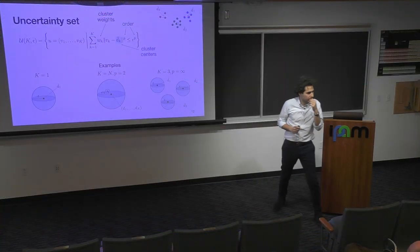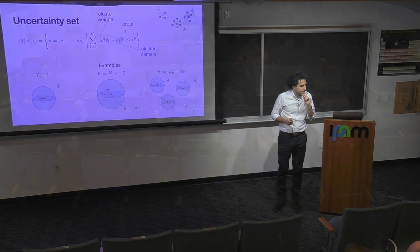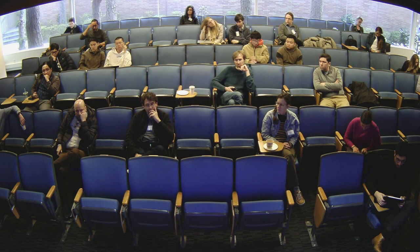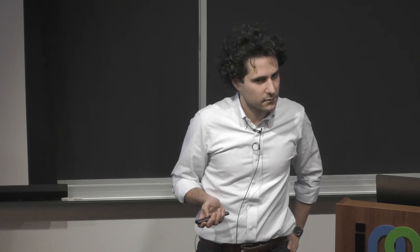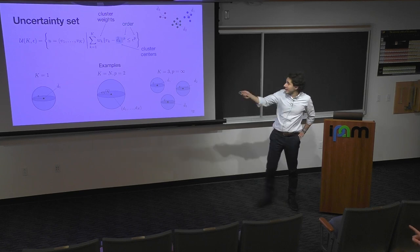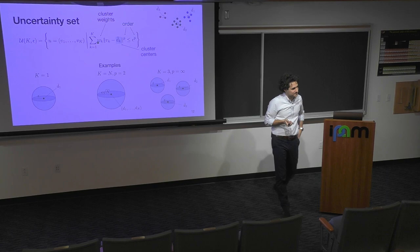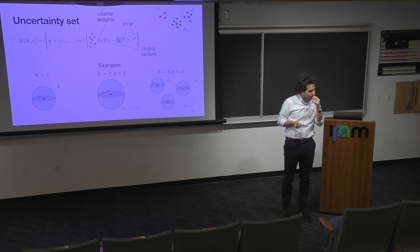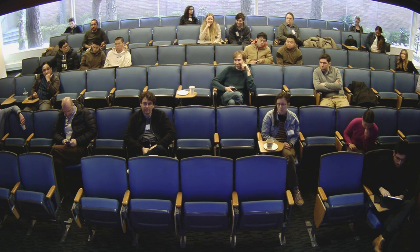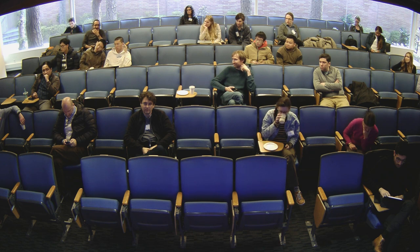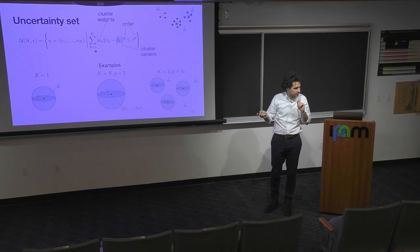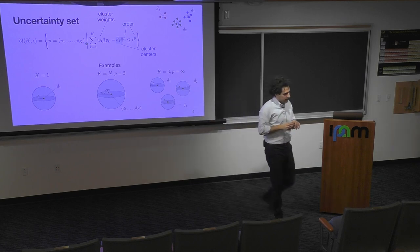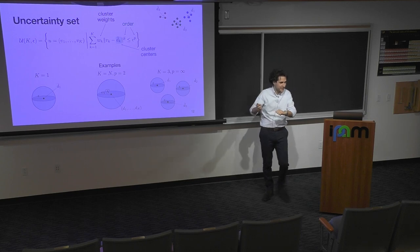An audience member asked why we lift to a vector with one point per cluster. The answer is that the weights wk capture the relative importance of each cluster. Although you're lifting to higher dimension, you reduce the dimension afterwards when you take the robust counterpart. The nice thing about this set is that it can represent many things we've already seen, bridging from robust optimization all the way to data-driven distributional robust optimization, and the lifting is only an intermediate step.